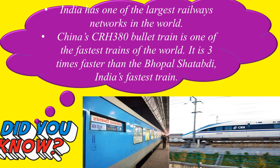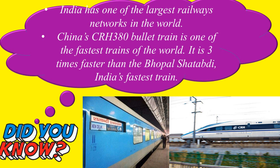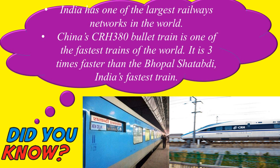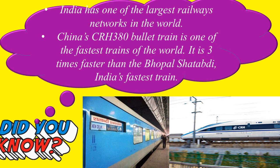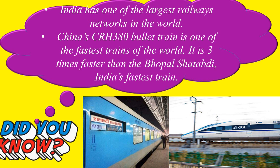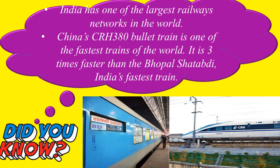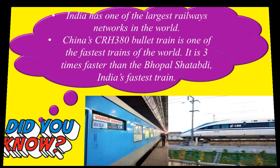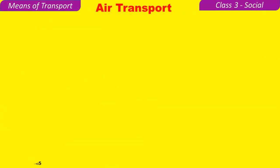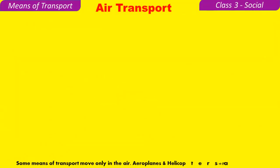China's CRH 380 bullet train is one of the fastest trains in the world. It is three times faster than India's Bhopal Shatabdi, which is India's fastest train. Air transport — some means of transport move only in the air.